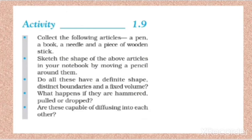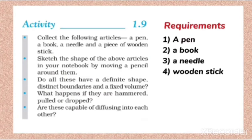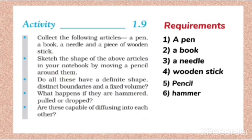Collect the following articles: a pen, a book, a needle, and a piece of wooden stick. Sketch the shape of the above articles in your notebook by moving a pencil around them. So the requirements are a pen, a book, a needle, and a piece of wooden stick. A pencil is required to sketch their shapes, and a hammer is also required because the next point asks what happens if they are hammered, pulled, or dropped.